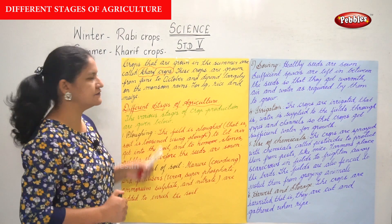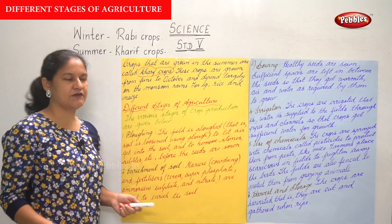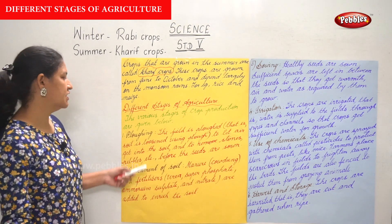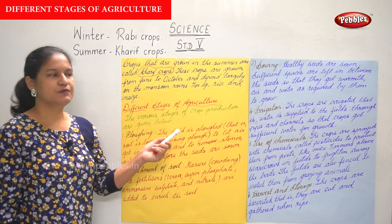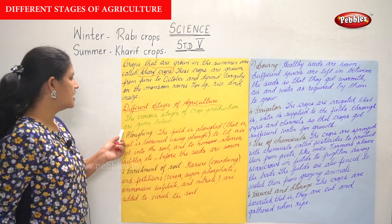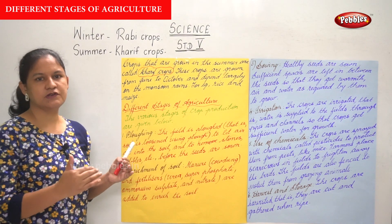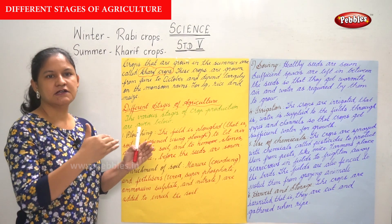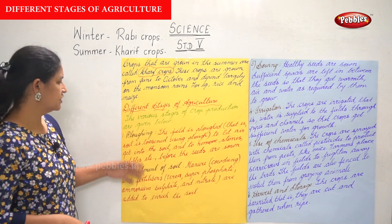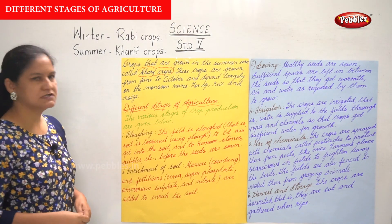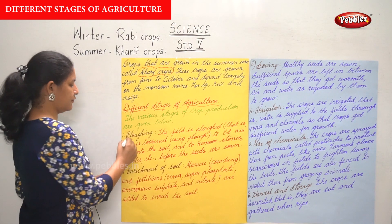Moving on to the different stages of agriculture. The various stages of crop production are given below. The first is ploughing.